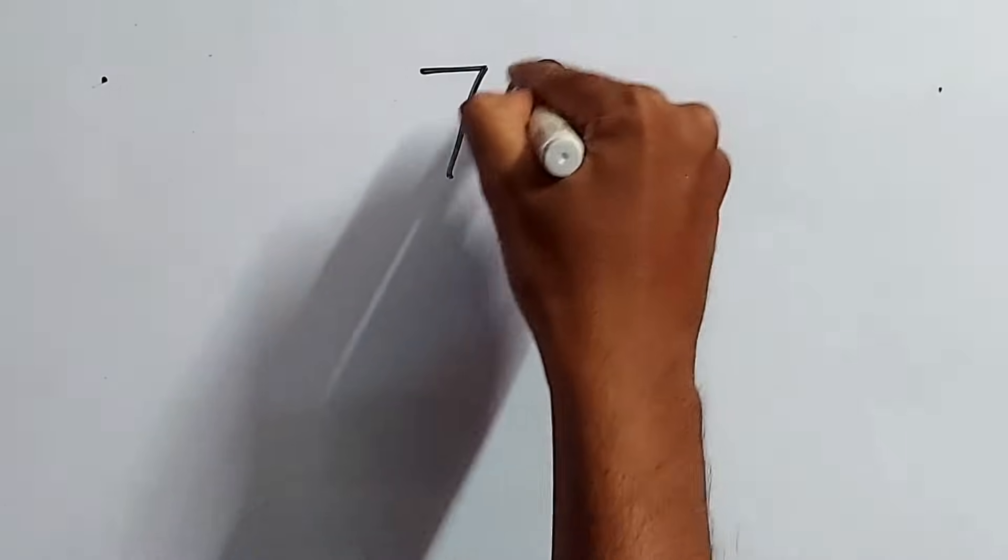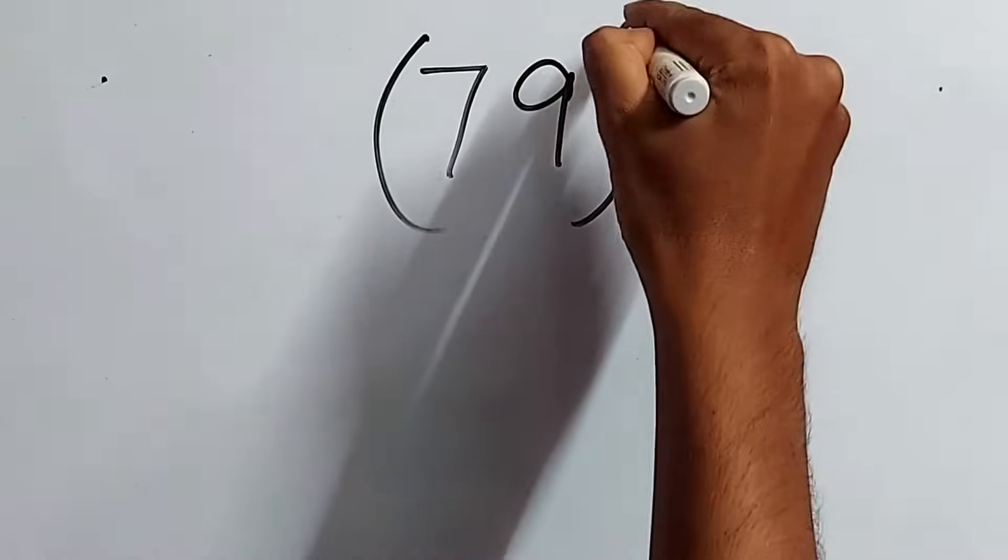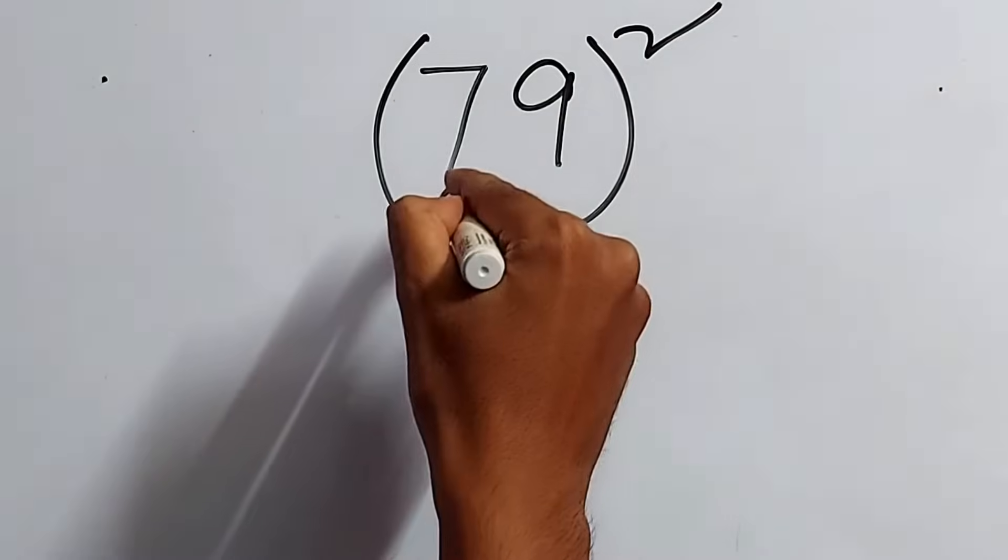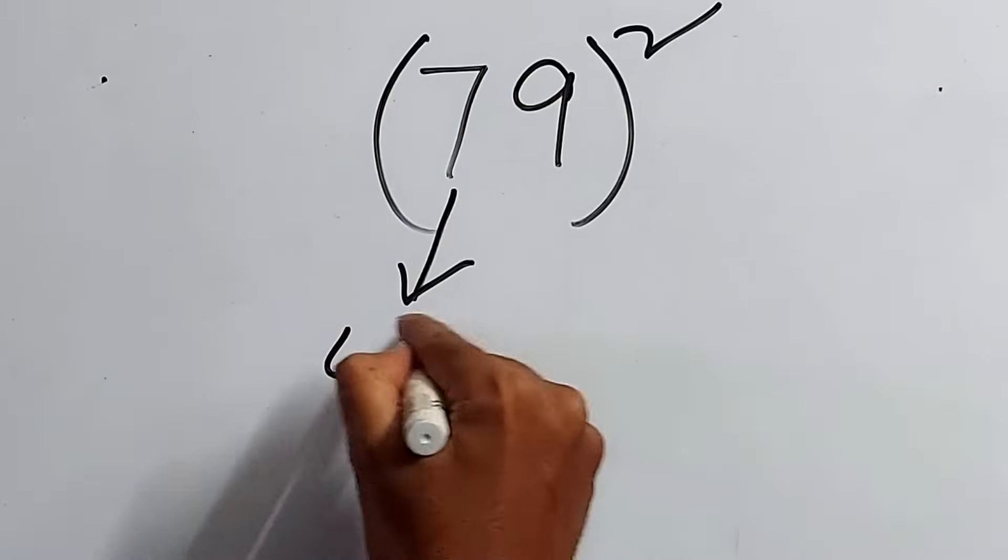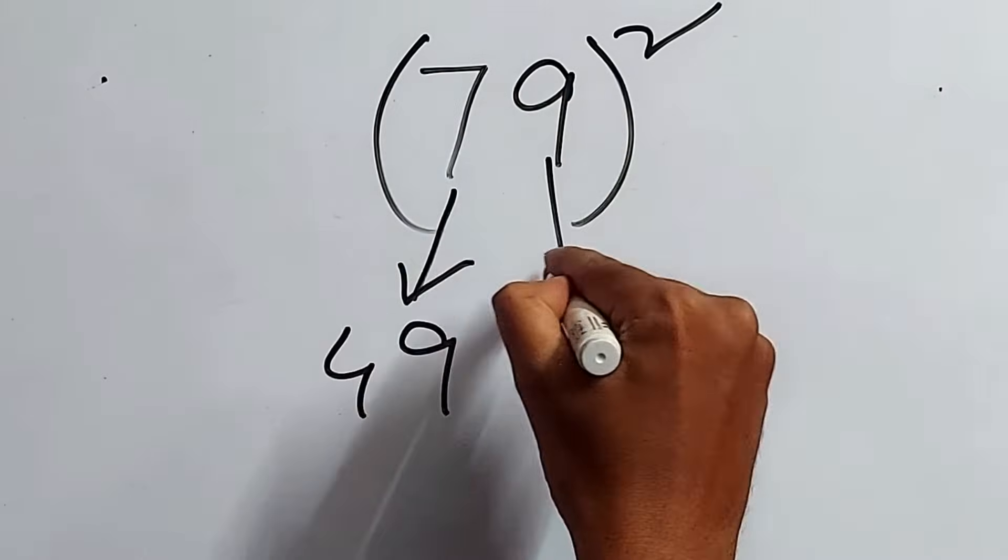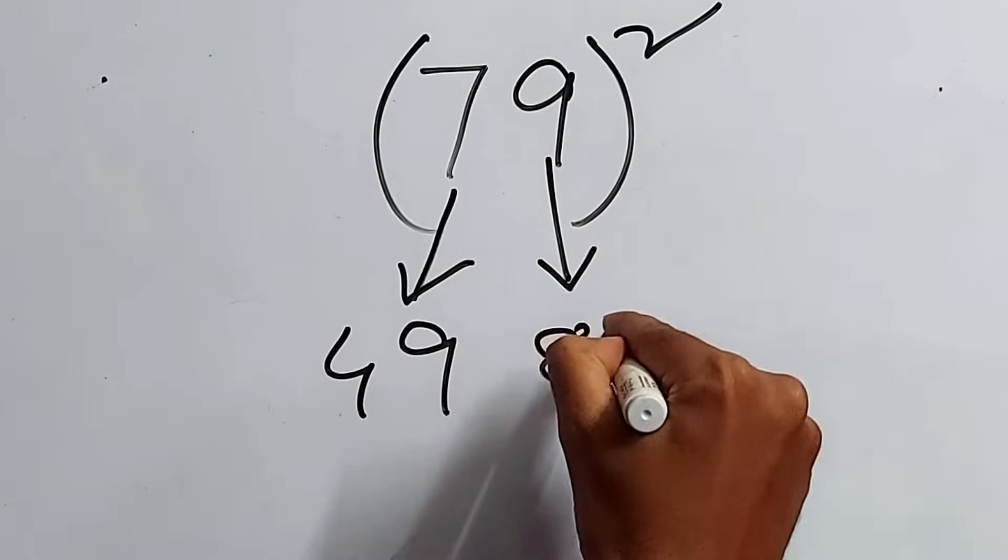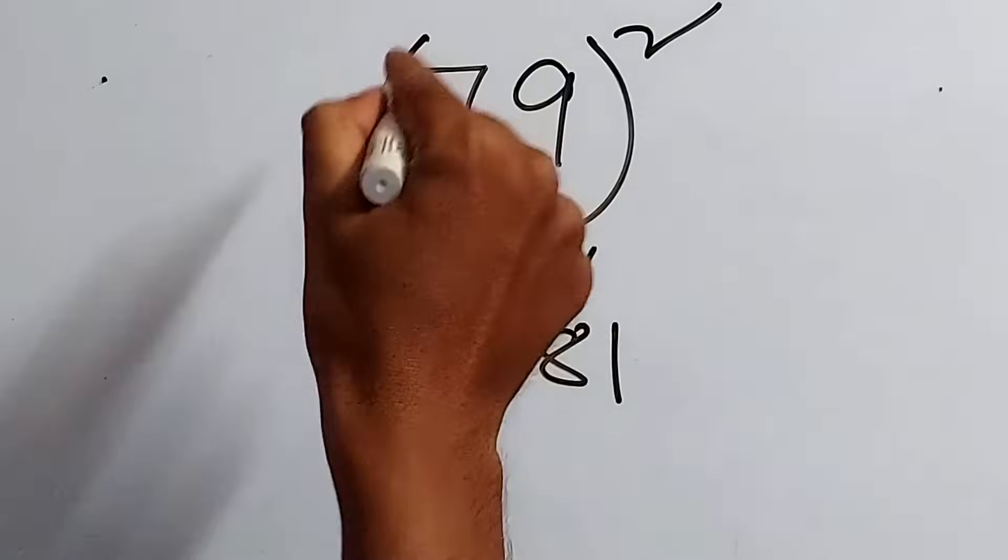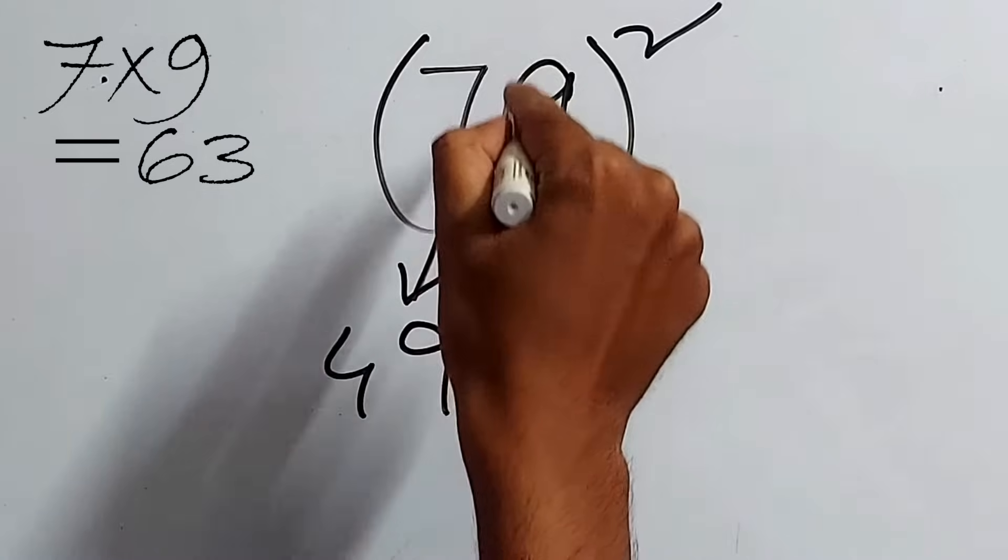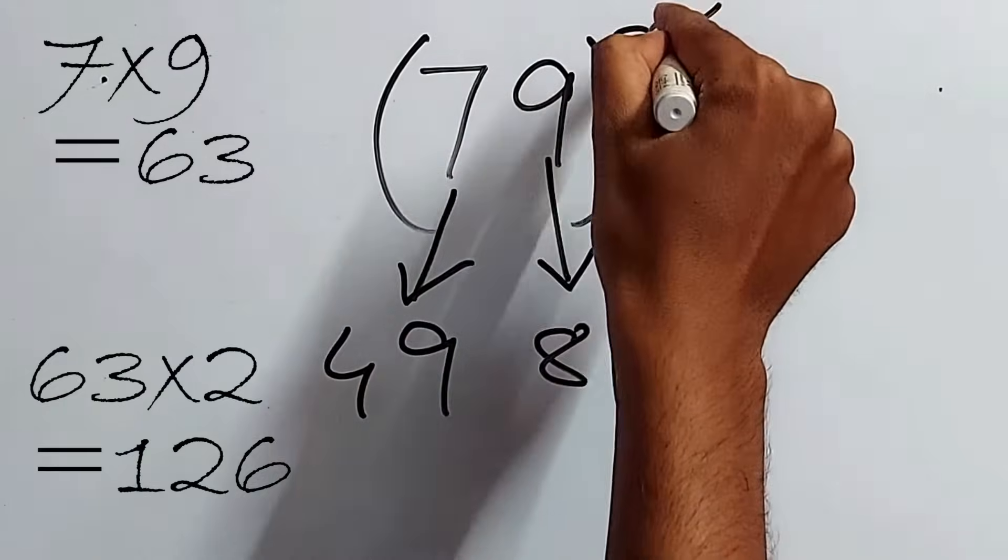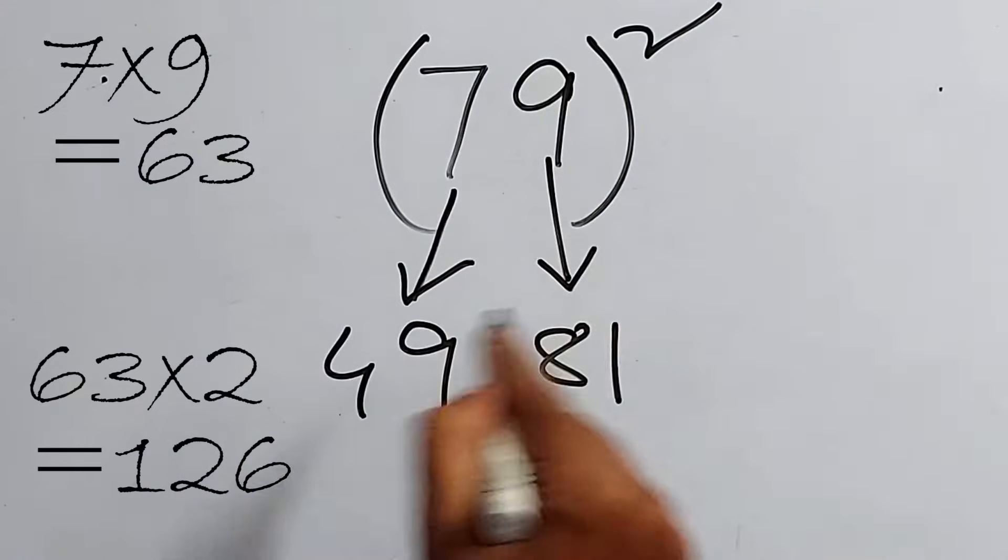That is 79, right? 79 square. Same way. We will find the 7 square, that is 49. And now, 9 square, that is 81. Now, if we multiply this 7 into 9, that is 63. And 63 into 2, this one, the answer will be 126.